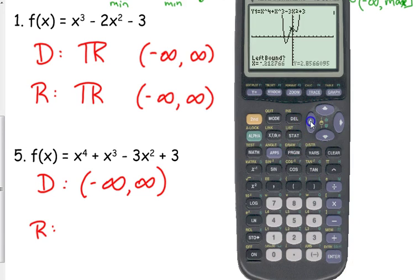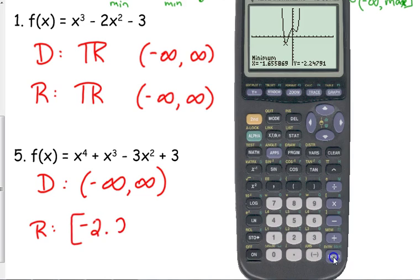You need the left bound, so you need to move your cursor to the left side of that minimum. Right bound, move your cursor to the right side of that minimum. And then for the guess, I always just hit enter where my right bound was. And that gives me my minimum. I don't care about the x value. I'm concerned about the y value, because the range is describing the y value.